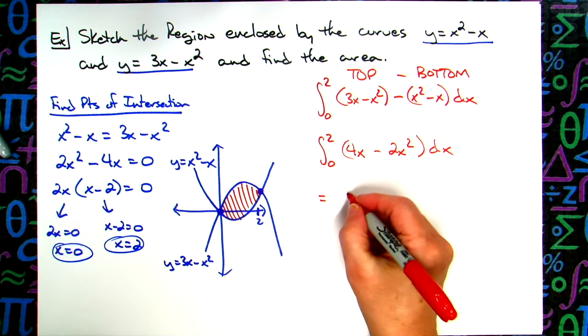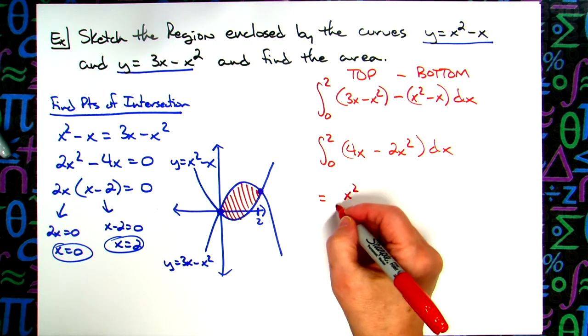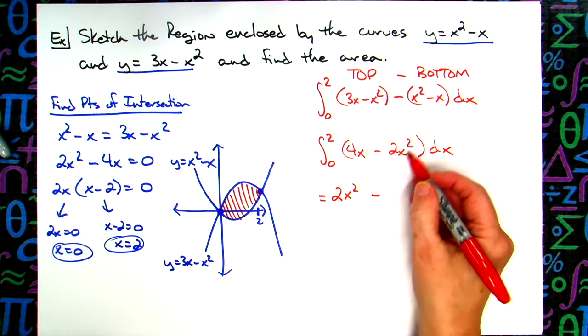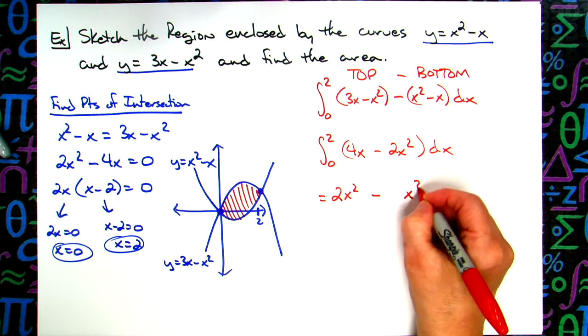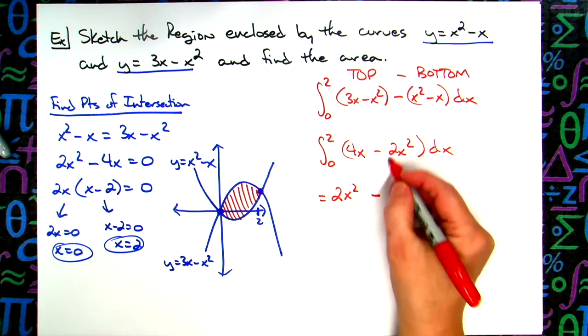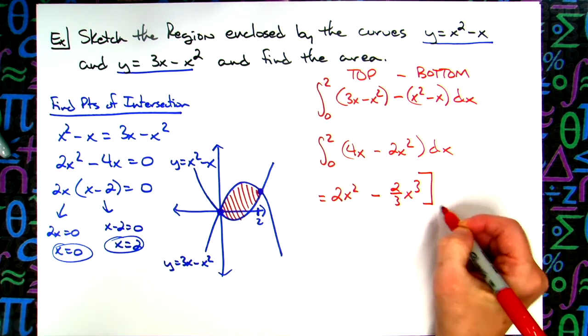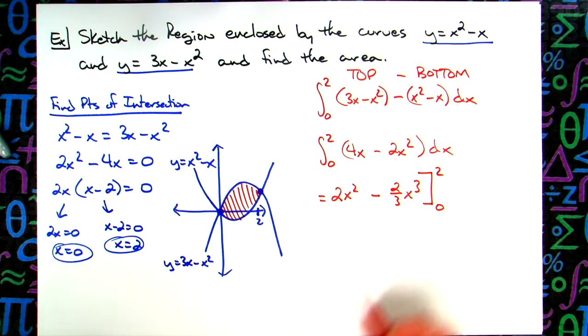Integrating here I'm going to have 2x squared. 4 divided by 2 gives me a 2. And then integrating here I'll have x to the third. Pulling that third down in front I'll have 2 thirds. So straightforward integration right there. We're going to still run from 0 to 2.